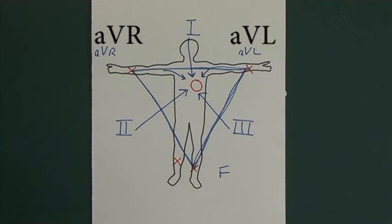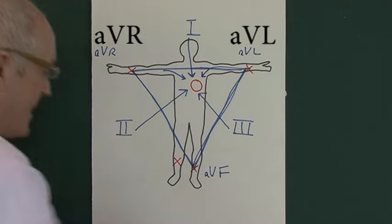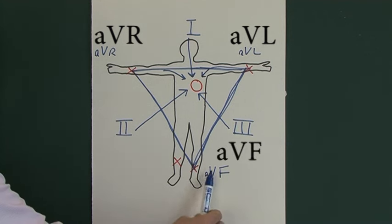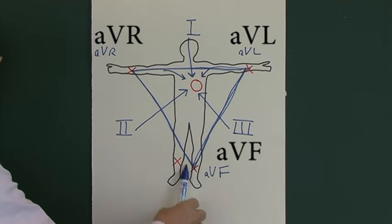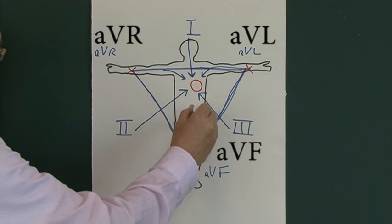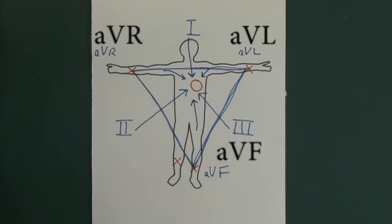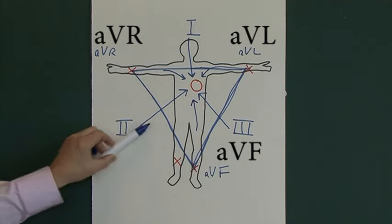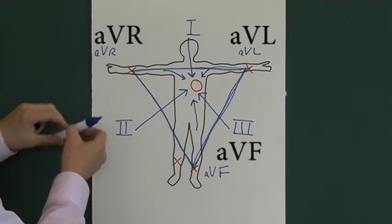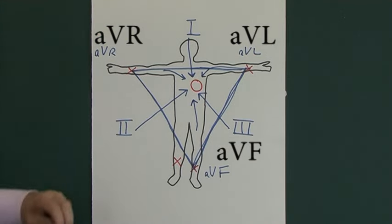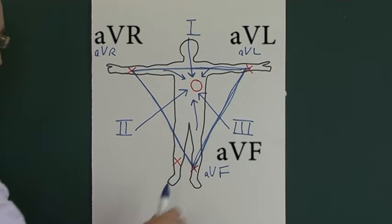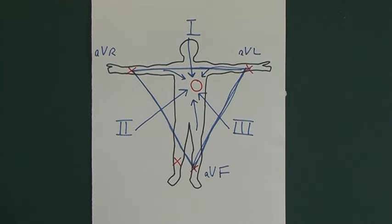The sixth lead is AVF, which stands for augmented voltage foot. Again, it's a unipolar electrode, looking at the heart from below. So we've now got six views of the heart - looking at it from lead one, lead two, lead three, AVR, AVL, and AVF - giving us anatomical positional information about what's going on.